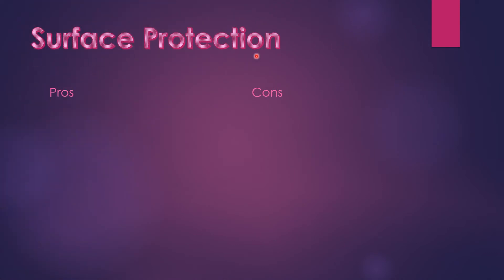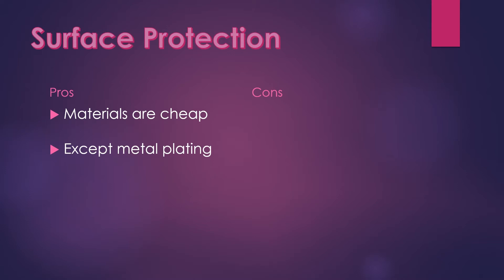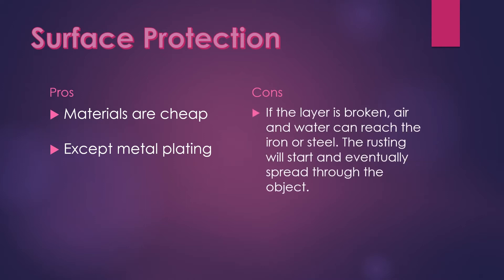Now let's look at the pros and cons of surface protection. The materials are cheap — paint is not that expensive, and plastic is cheap too. However, metal plating is expensive, as nickel and chromium are costly. The disadvantage is that if the layer is broken, air and water can reach the iron and rusting will start, eventually spreading through the object — just like an old car where the paint has gone and rust forms.